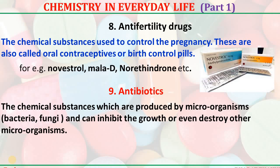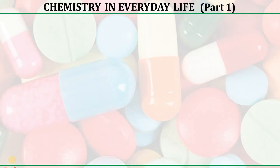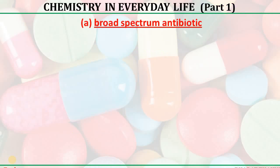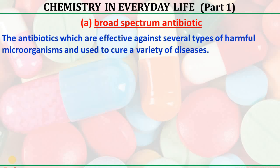Antibiotics — the chemical substances which are produced by microorganisms and can inhibit the growth of or even destroy other microorganisms are called antibiotics. For example, penicillin. They are further classified into two types: broad-spectrum antibiotics and narrow-spectrum antibiotics. Broad-spectrum antibiotics are those which are effective against several types of harmful microorganisms and are used to cure a variety of diseases.